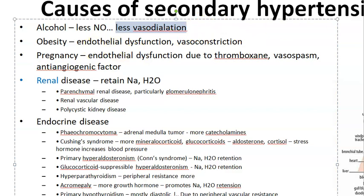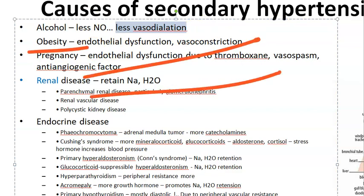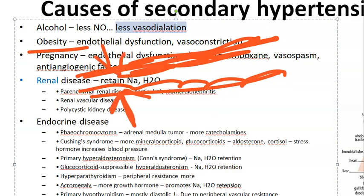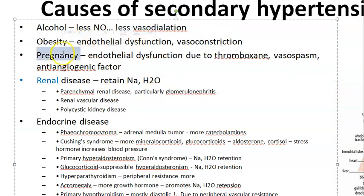In obesity, there is endothelial dysfunction — the inner layer of blood vessels is affected. Again there is vasoconstriction, and when there is vasoconstriction, hypertension results.